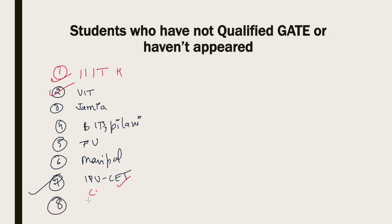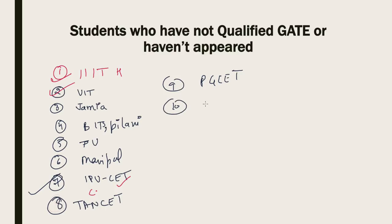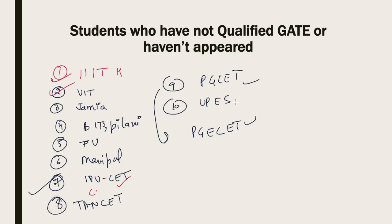There are also state university examinations like TANCET for Tamil Nadu state, PGCET, and UPES. There are two different examinations: one is PGCET and another also called PGCET — these are two separate examinations. Mainly, for post-graduation these are the state university examinations. Even if you haven't got a good GATE rank or missed GATE, you can still continue your preparation and give examinations for BARC (OCES and DCES), DRDO (junior category exam SEPCO), and ISRO.